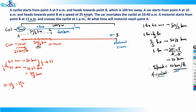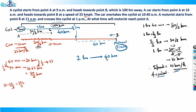The total distance was 100 km and the cyclist has moved 40 km, so 60 kilometers remain. The motorist started from point B at 11 am and crossed the cyclist at 1 pm — that's two hours. In two hours the motorist covered 60 kilometers, so the speed of the motorist is 60 ÷ 2 = 30 kilometers per hour.